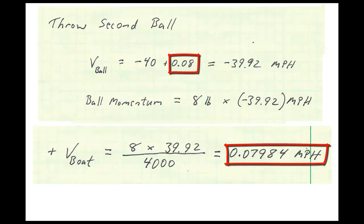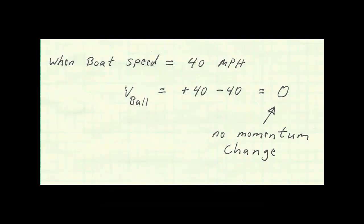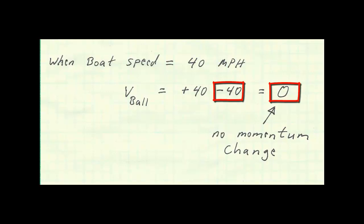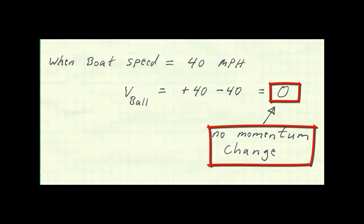This has an interesting effect as the boat's speed approaches 40 miles per hour. Each time I pick up a ball, it speeds up to the same speed as the boat — 40 miles per hour in the forward direction. Then when I throw it off the back at minus 40 miles per hour, the resulting speed is 0. The net change in momentum for the ball is 0, and the net change in momentum for the boat will also be 0. So I'm just throwing balls off the back of the boat to no purpose, and wasting a whole lot of energy.